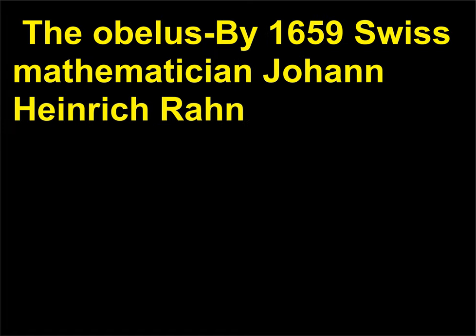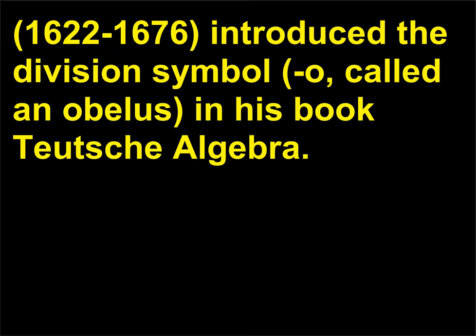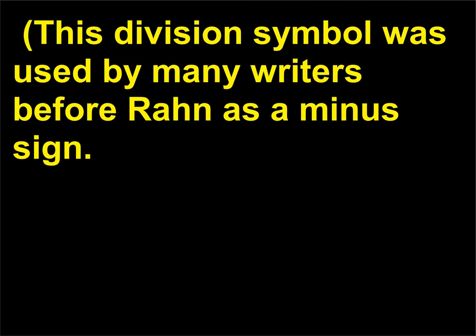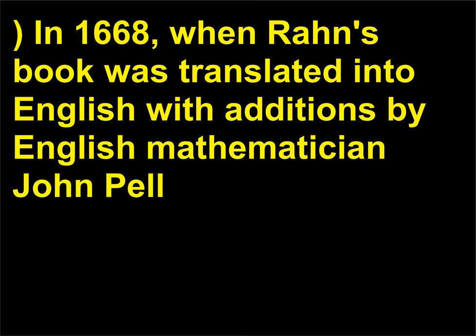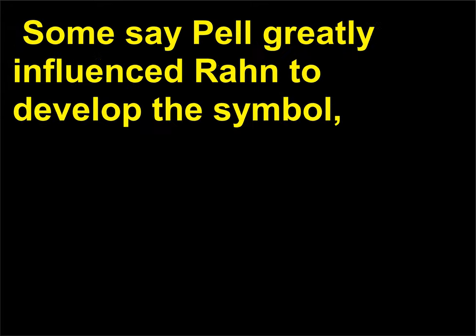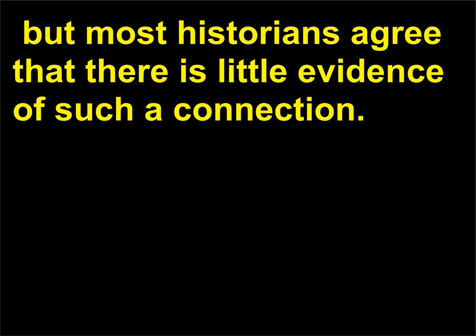The obelisk: By 1659, Swiss mathematician Johann Heinrich Rahn (1622-1676) introduced the division symbol ÷, called an obelisk, in his book Teutsche Algebra. The symbol was a combination of colon and dash. This division symbol was used by many writers before Rahn as a minus sign. In 1668, when Rahn's book was translated into English with additions by English mathematician John Pell (1610-1685), the division symbol was retained. Some say Pell greatly influenced Rahn to develop the symbol, but most historians agree there is little evidence of such a connection.